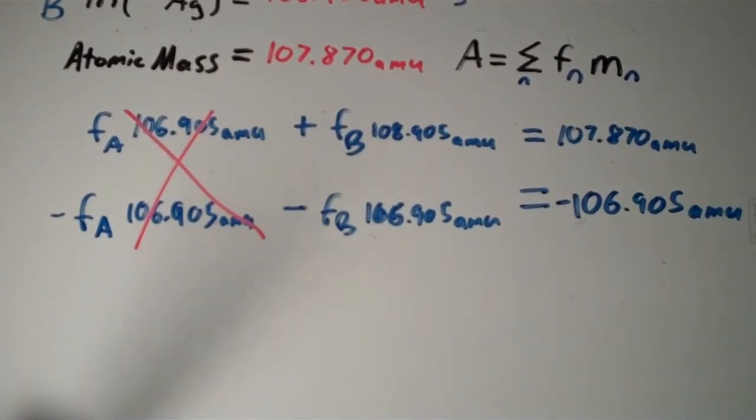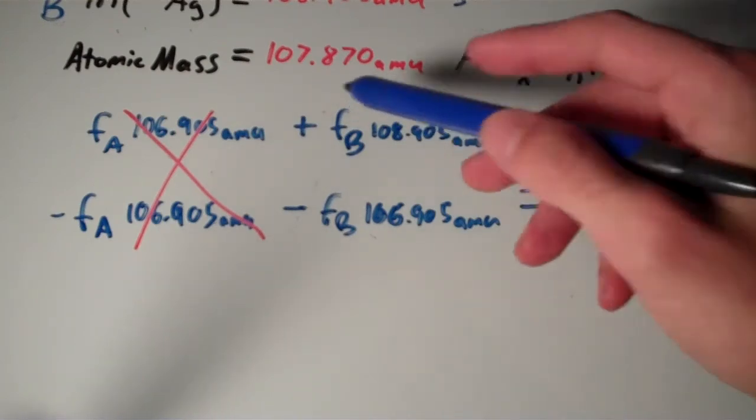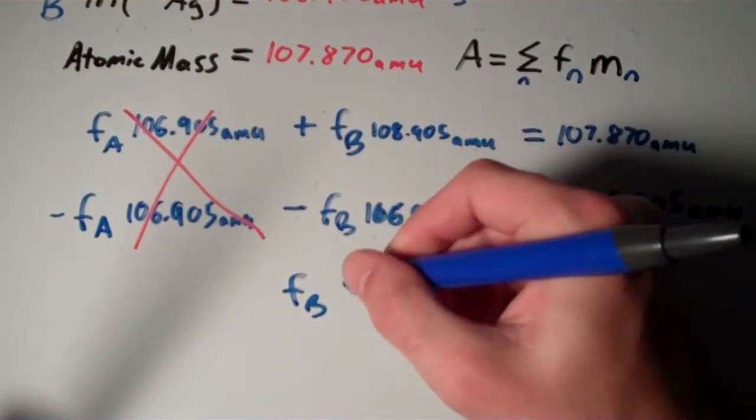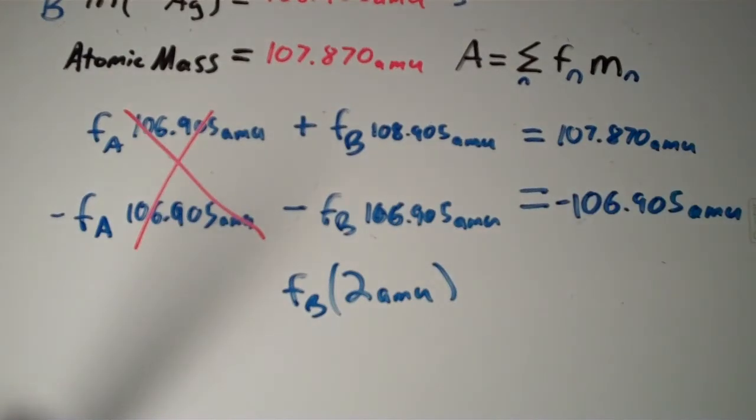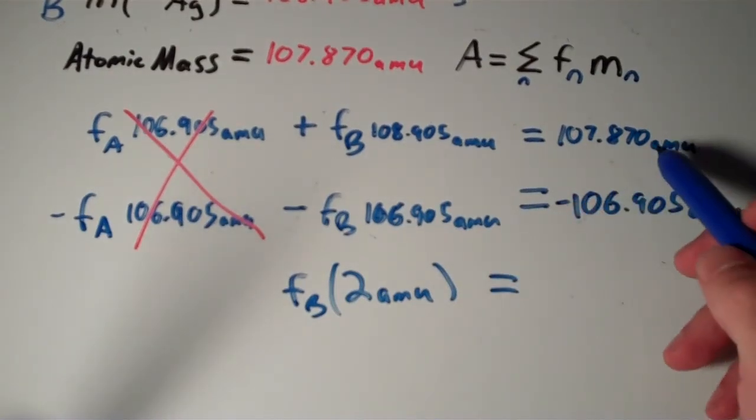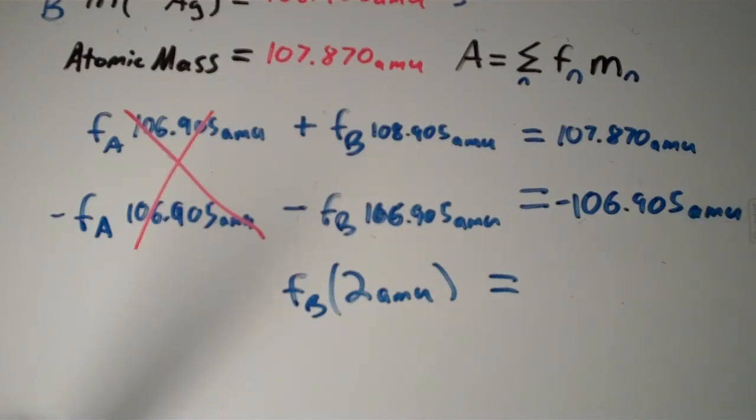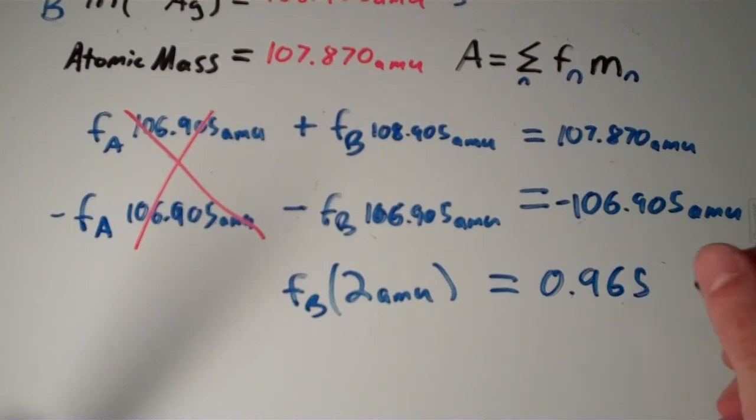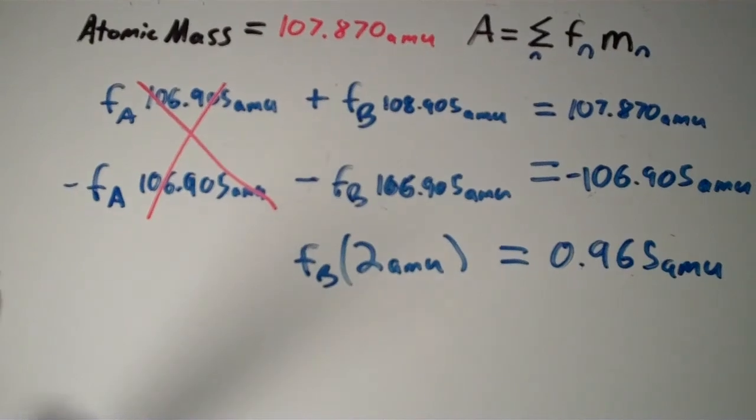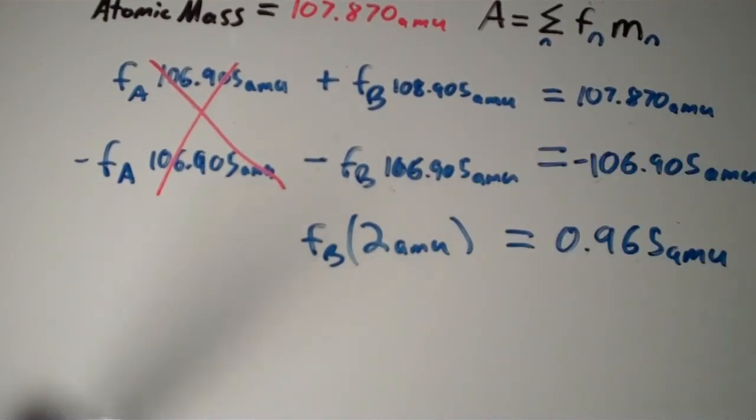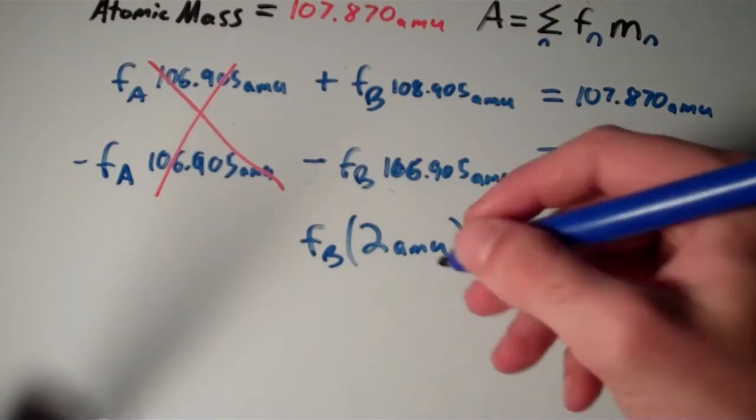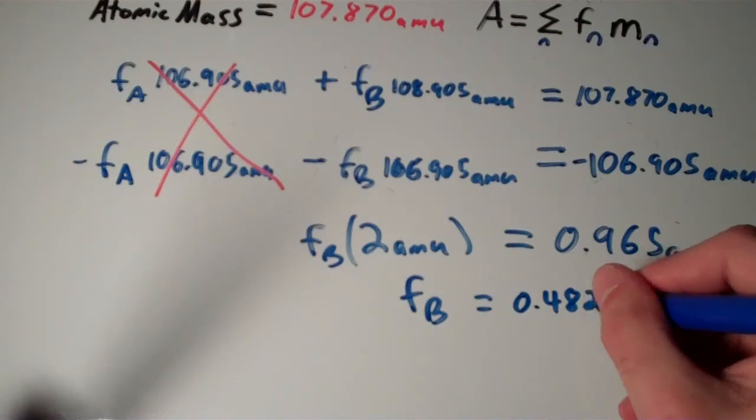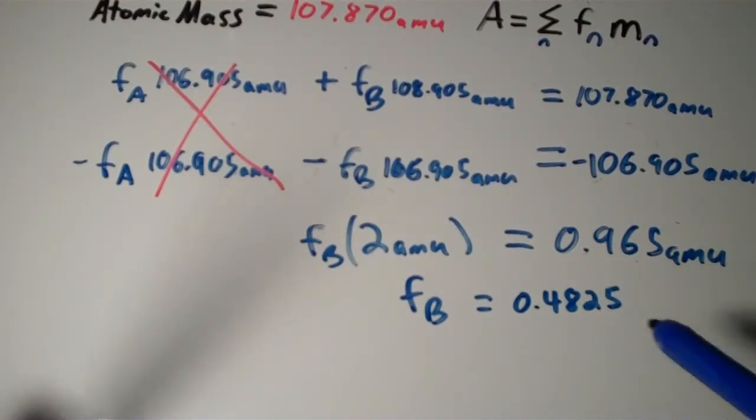Now let's add both sides of the equation together. 108.905 AMU times FB minus 106.905 AMU times FB is just going to be 2 AMU times FB, or FB times 2 AMU. And then if we do that with the right side of the equation, we get 107.870 AMU minus 106.905 AMU, and that will give you 0.965 AMU. Now all we've got to do is just divide both sides of the equation by 2 AMU and we get that the fraction of B equals 0.4825, and that doesn't have any units because the AMUs would cancel out.